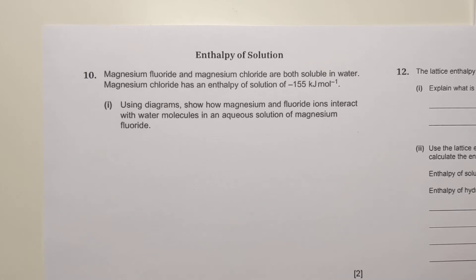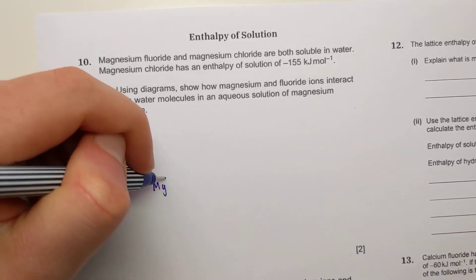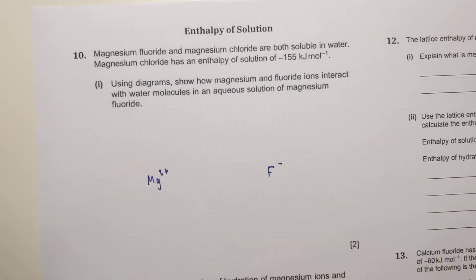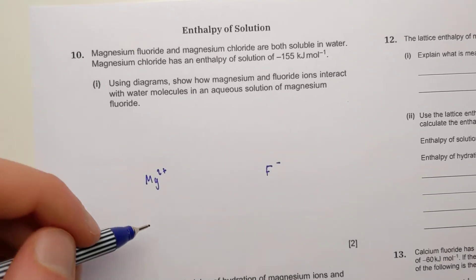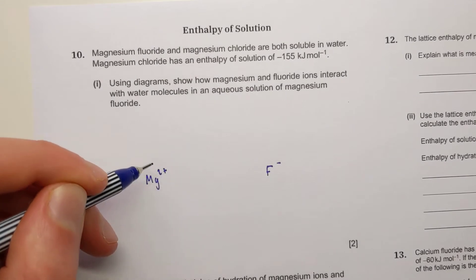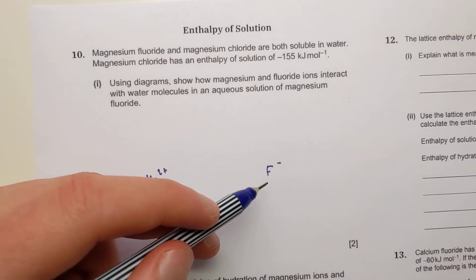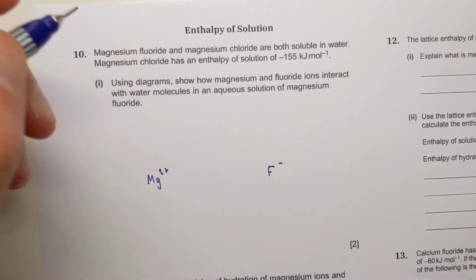Question 10 part one asks you to draw a diagram to show how magnesium and fluoride ions interact with water molecules in an aqueous solution of magnesium fluoride. You have to show how magnesium ions are dissolved in water and how fluoride ions are dissolved in water. The key feature is showing the correct part of the water molecule interacting with the correct ion. Magnesium is positively charged, so it interacts with the delta-negative part of water — the oxygen. Fluoride is negative, so it interacts with the delta-positive part — the hydrogen.